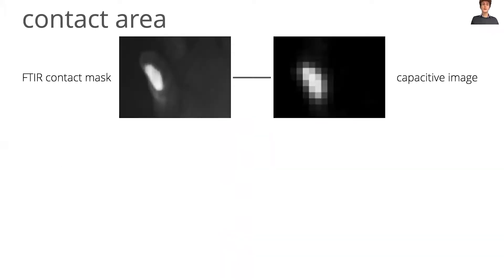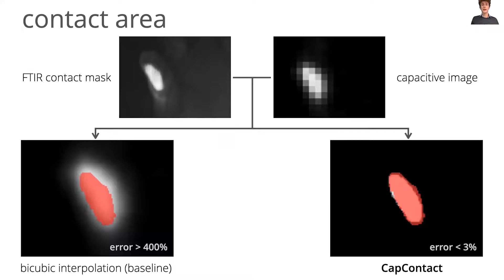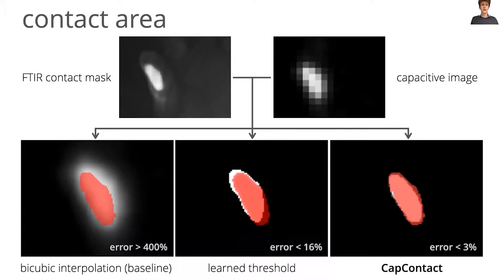With the FTIR and capacitive images as input, the currently existing default implementation with a threshold produces an area that is way too large, just as expected. In contrast, CapContact reaches a contact area size with less than 3% difference from the actual area. Using our dataset, we also optimized a learned threshold that minimizes this area across all samples, but it still produces a much worse outcome than CapContact.